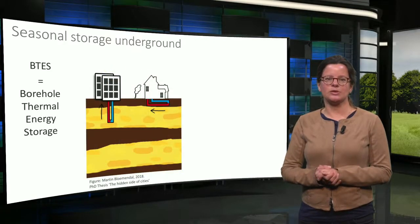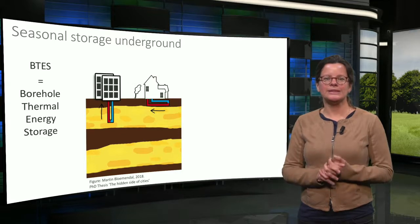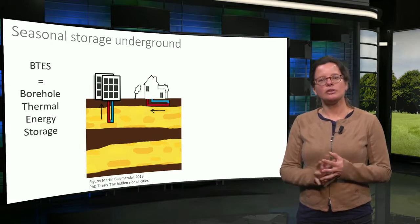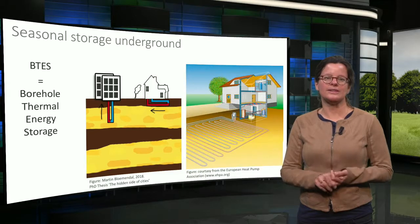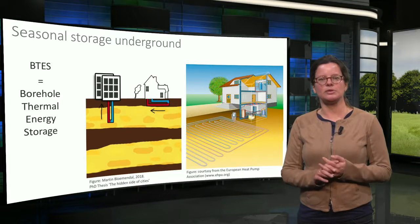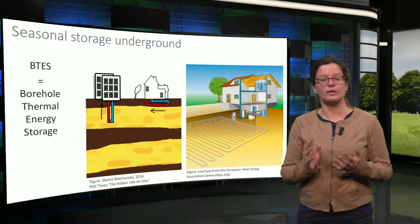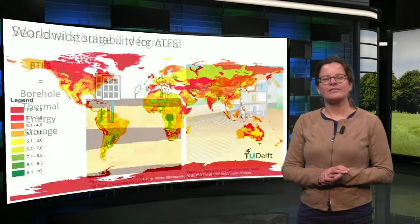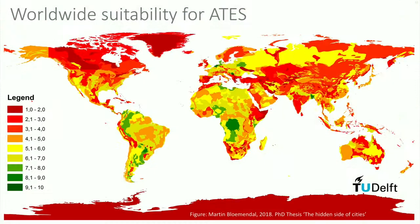Also ground heat exchangers can be used to cool and heat buildings combined with a heat pump. These systems are called BTES systems, borehole thermal energy storage. Vertical boreholes are the most common, but also horizontal ground heat exchangers can be applied. The figure on the right shows a scheme of a dwelling with a heat pump using a horizontal ground heat exchanger as a source for the heat pump. The feasibility of an ATES system depends on the properties of the subsurface, and the following map shows the worldwide suitability for applying ATES systems. Sensible thermal energy storage can be found in many sizes and for different storage periods, from short term to long term, even seasonal storage.